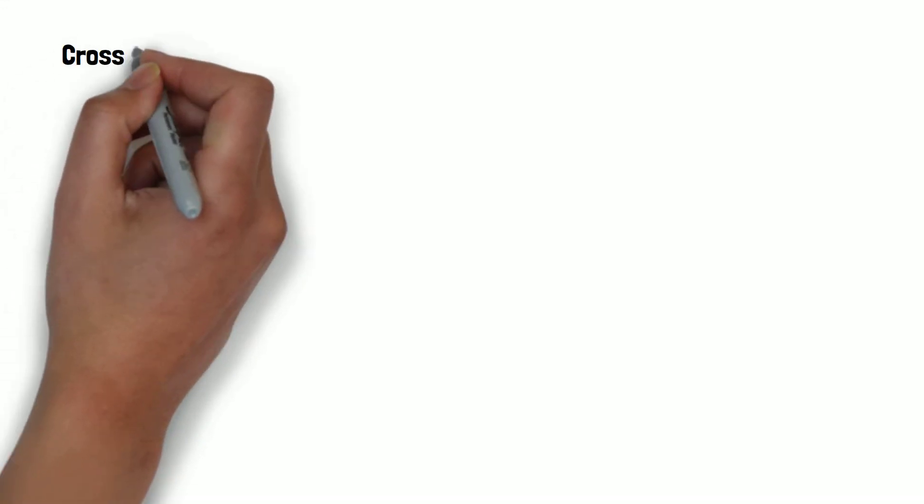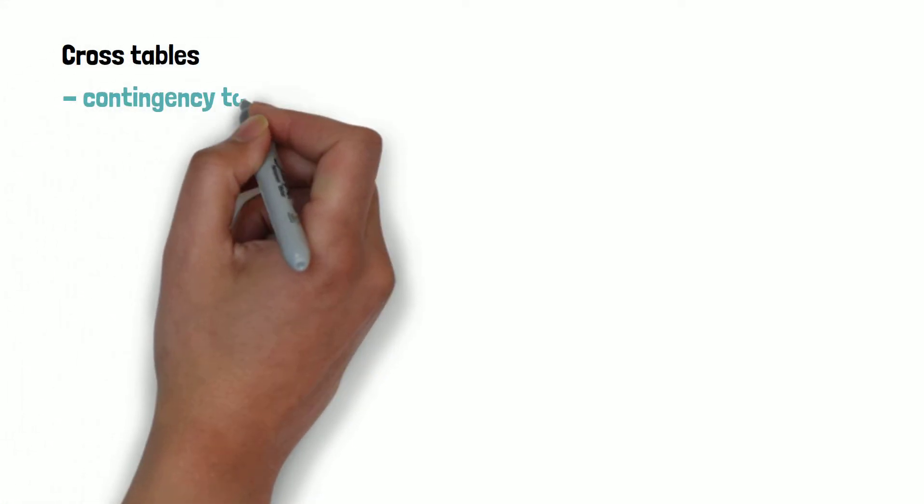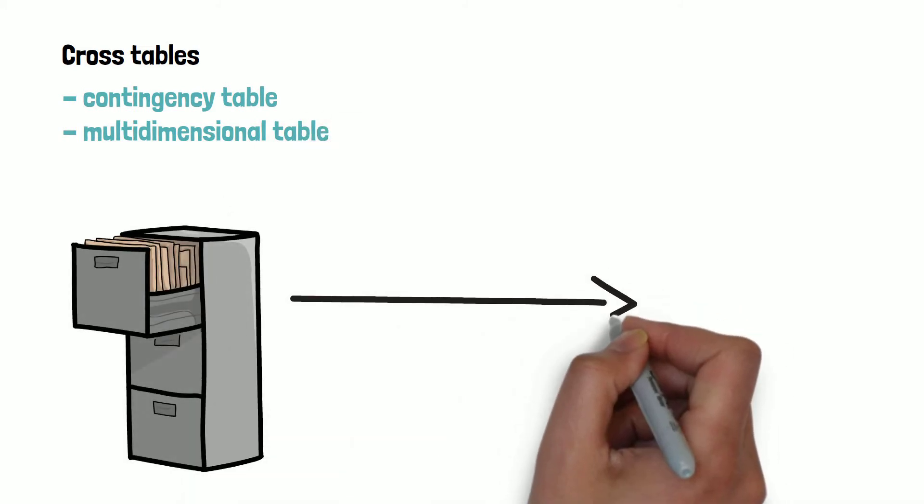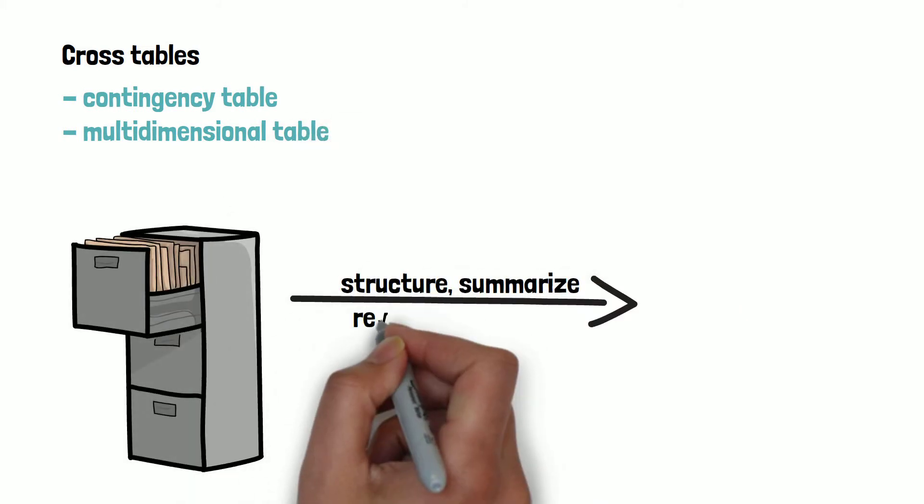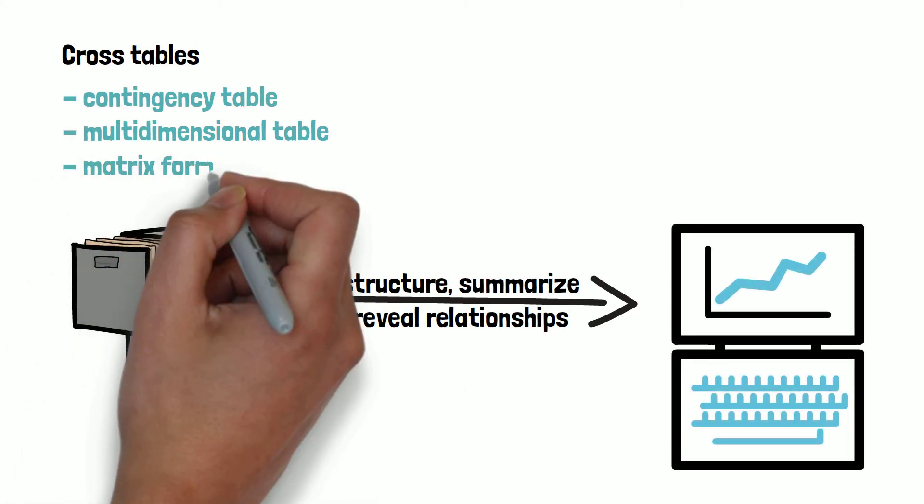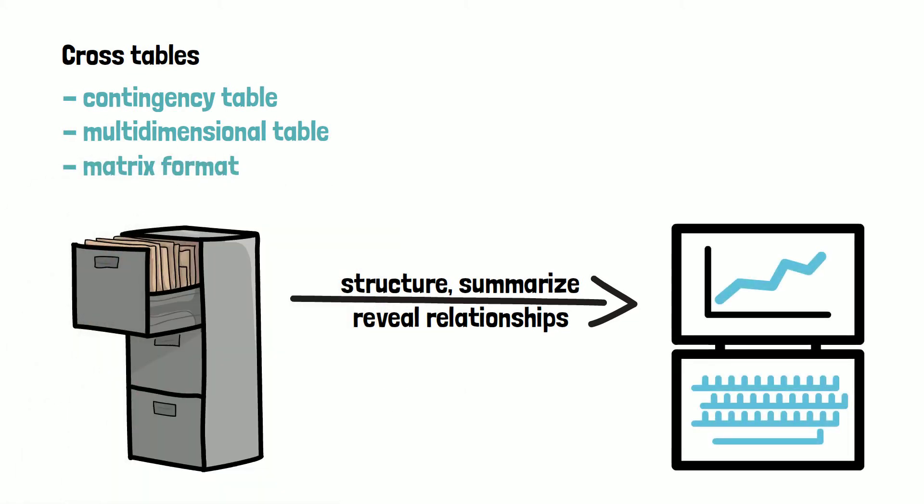Cross tables are also known as contingency or multidimensional tables. Large amounts of data can be summarized in a structured way and possible relationships between important variables can be revealed. Cross tables have a matrix format in which the frequency distributions of the features of two variables are displayed.